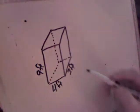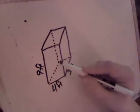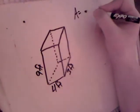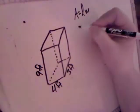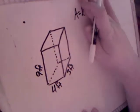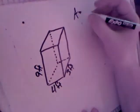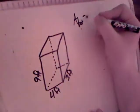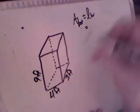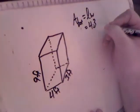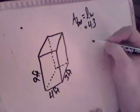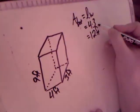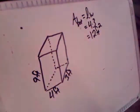I'm going to find the area of the bottom right now. To find the area, it's a rectangle, so it's going to be length times width. Length times width is 4 times 3. 4 times 3 is 12 feet squared. That's the area of the bottom.